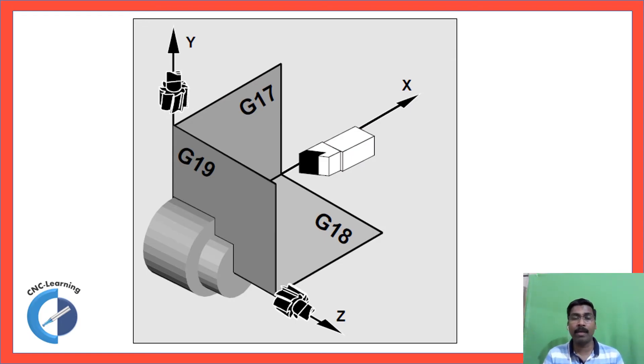Now let's examine turning center or turn mill center. So here, you know, in a turning center, there are two axes. Spindle axis is Z, and the diameter axis is X. So XZ plane is G18. It is a default plane.